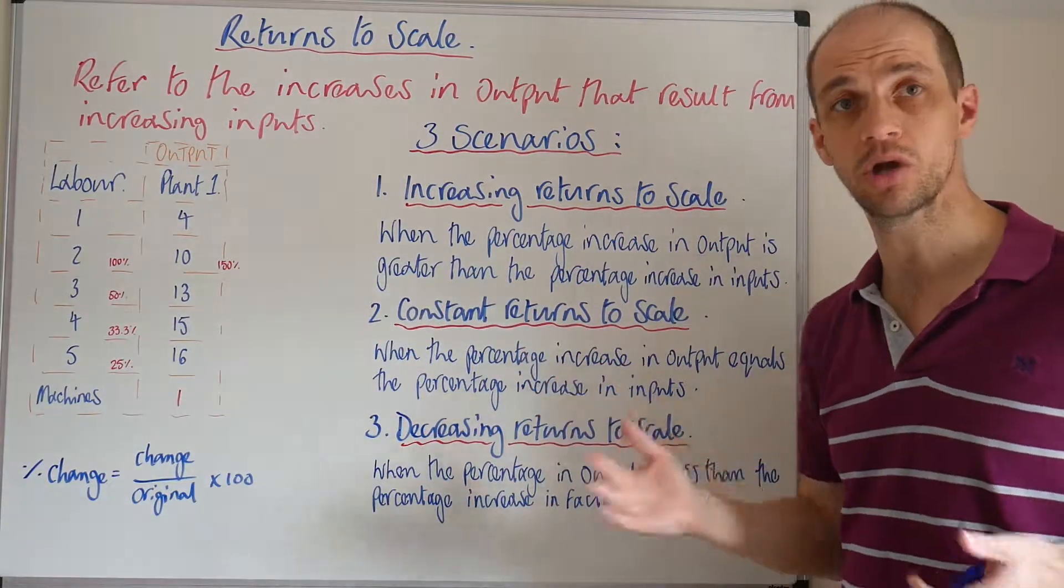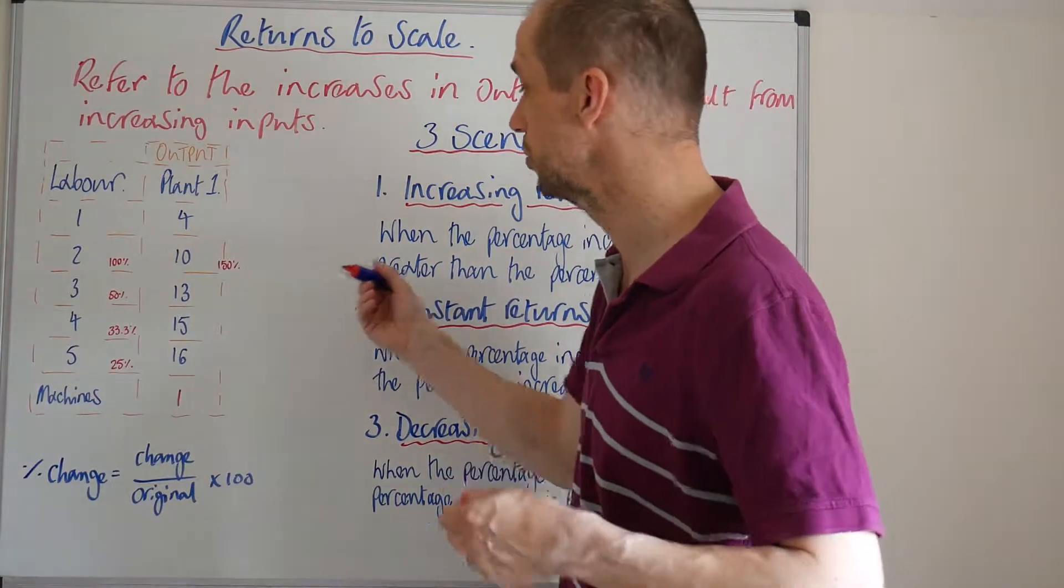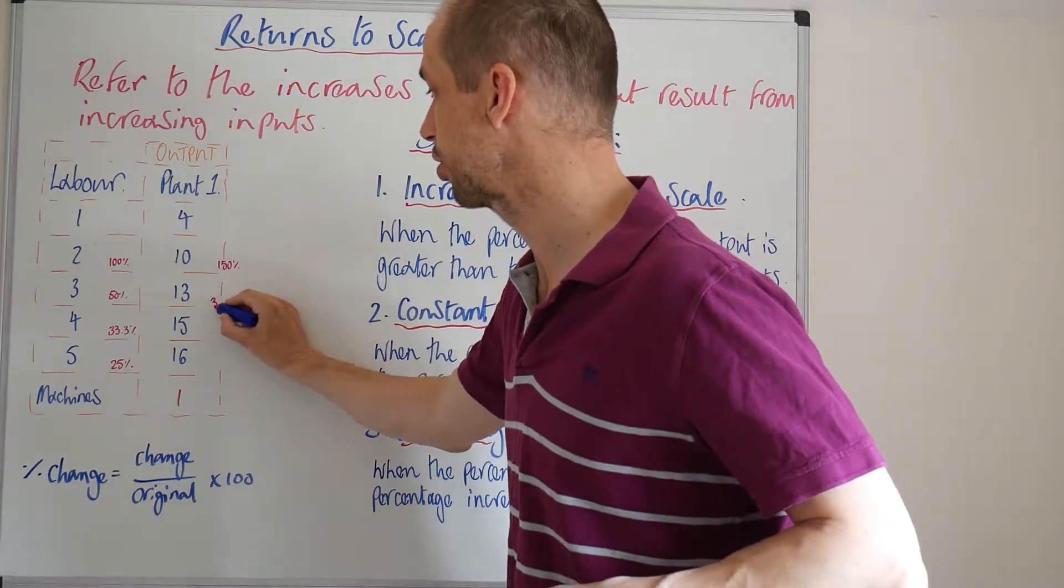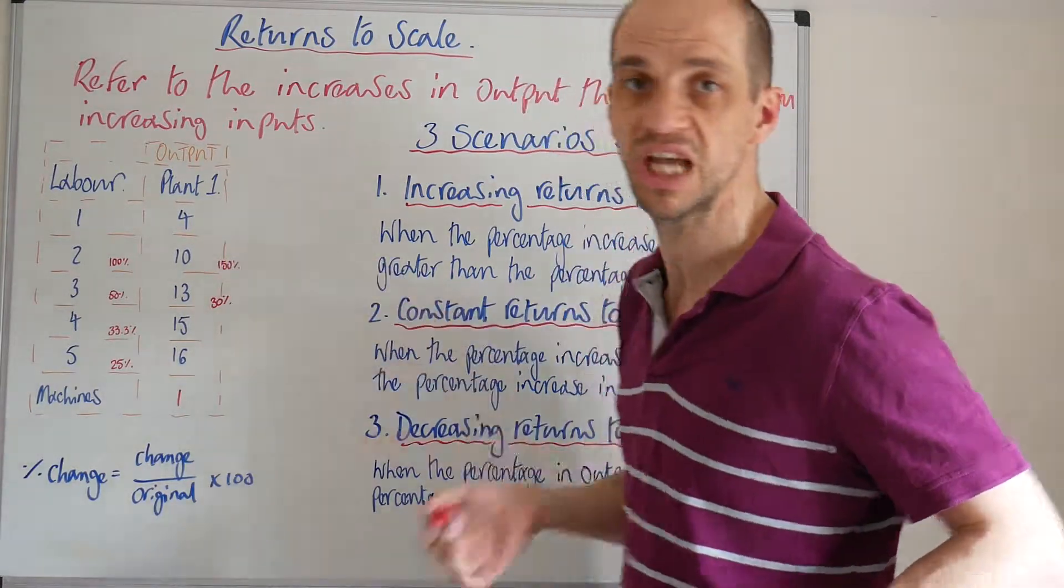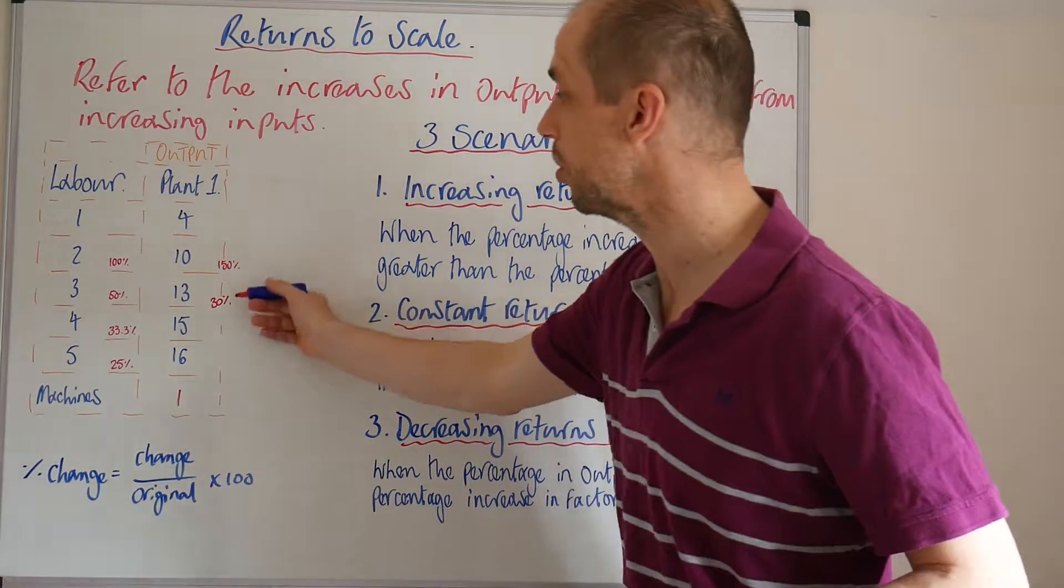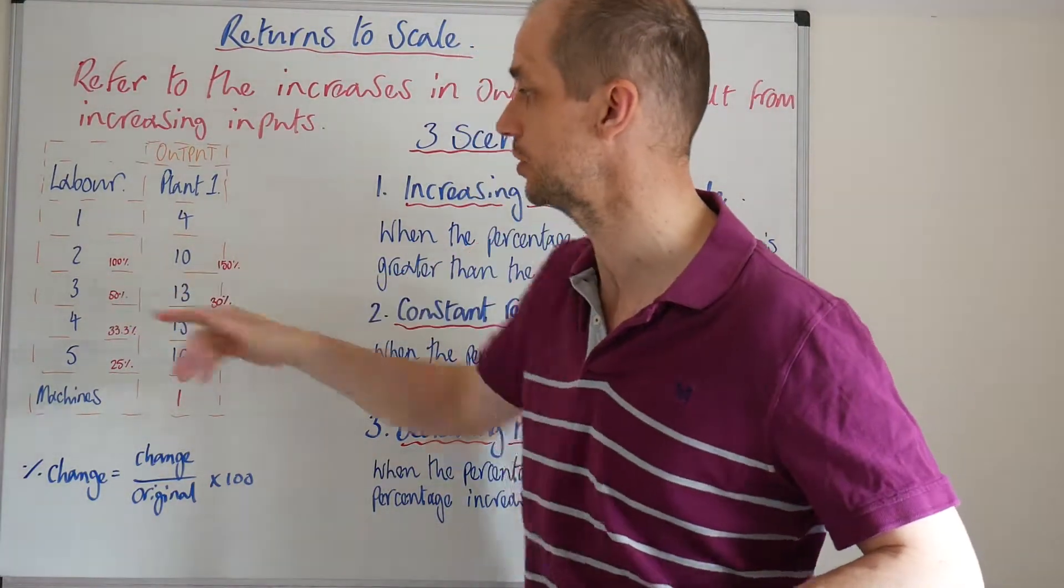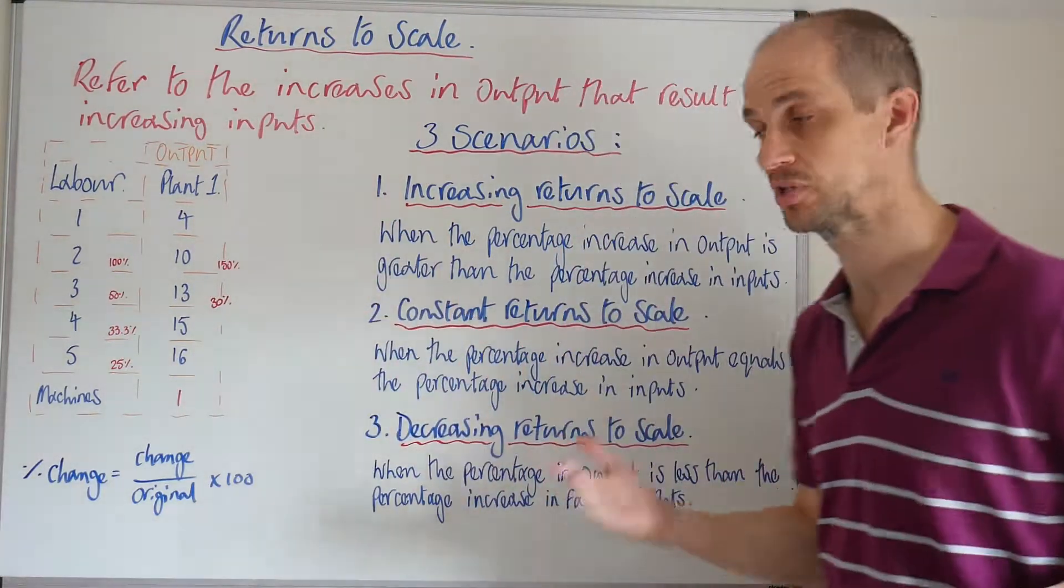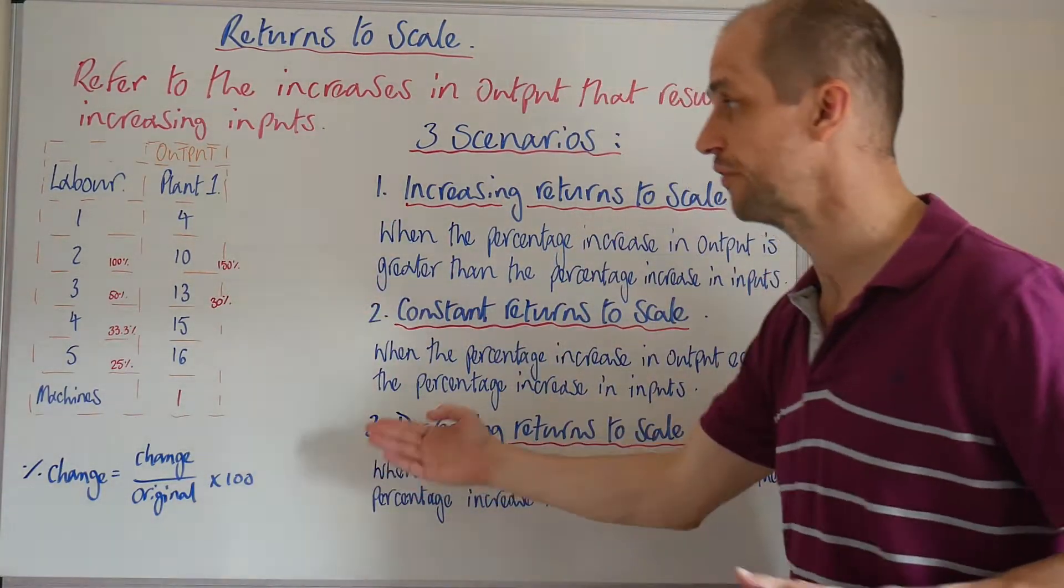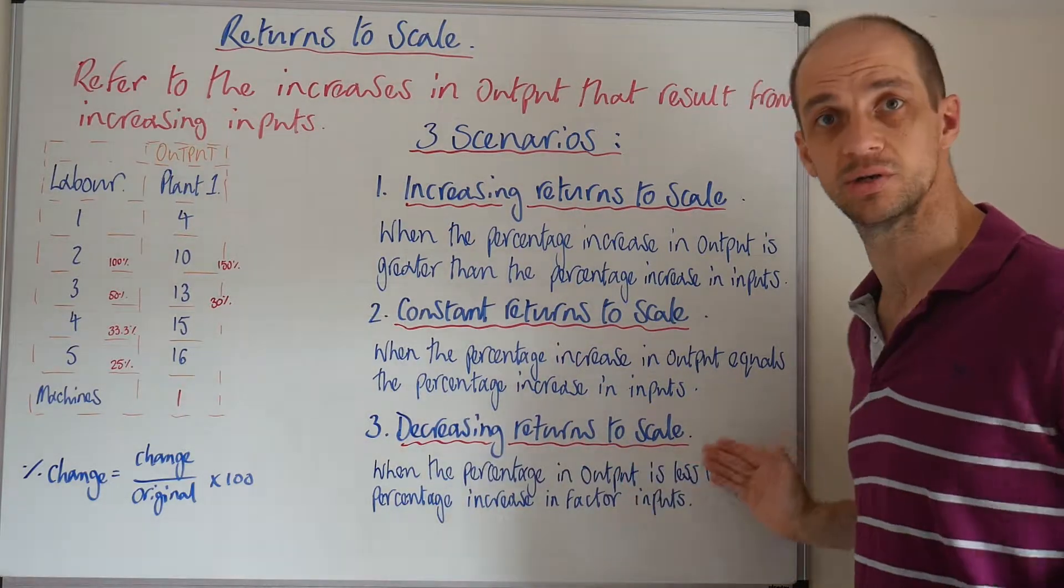that would be a constant return to scale. But what we can clearly see is only a 30% increase because we're moving up 3 from 10. So what we are already seeing is that the factor inputs are increasing at a greater rate now than the output is. That means the firm is beginning to experience decreasing returns to scale.